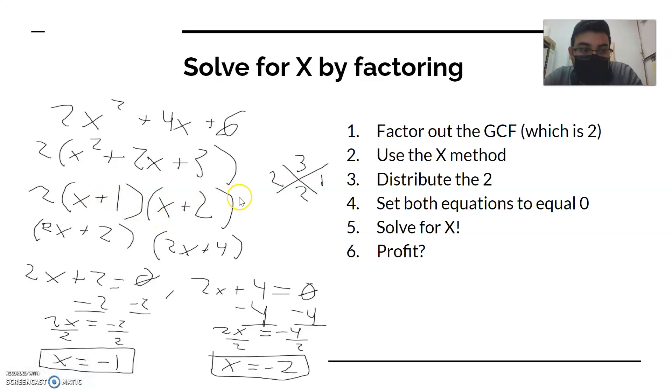Next you distribute the 2, so it turns into bigger equations: (2x + 2) and (2x + 4), because 2 times x is 2x and then 2 times 1 is 2, 2 times x here is 2x, and then 2 times 2 is 4. And then set both of the equations equal to 0 and solve as normal.